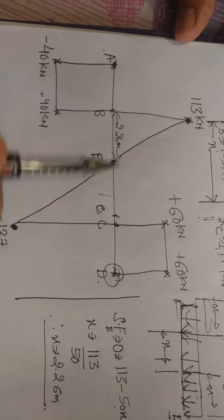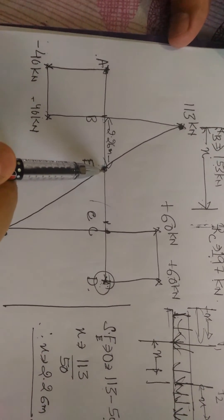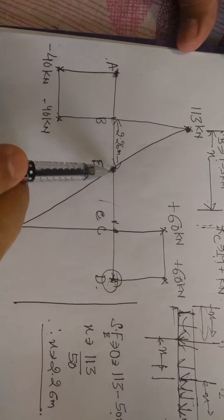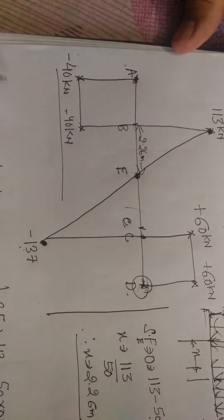That means at point E, the value of bending moment will be either maximum or minimum. That is, it will be at the extreme end.